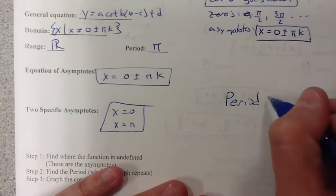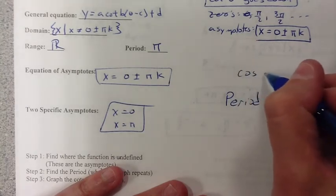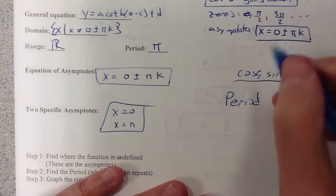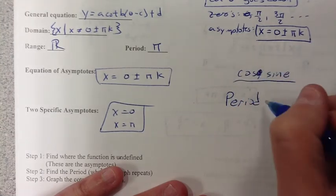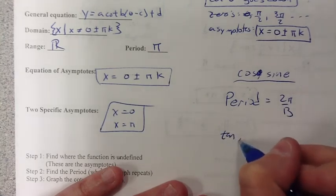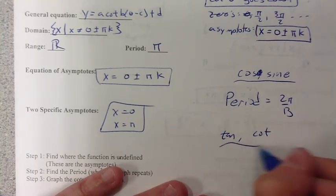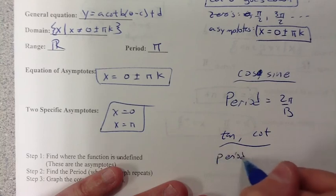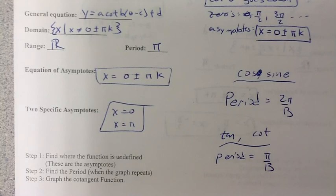Remember, the period for cosine and sine of theta is 2π/B. But for tangent and cotangent, our period to get that is going to be just π/B. A little bit easier to do. Look at this again if you need to, and go on to part two when you're ready.